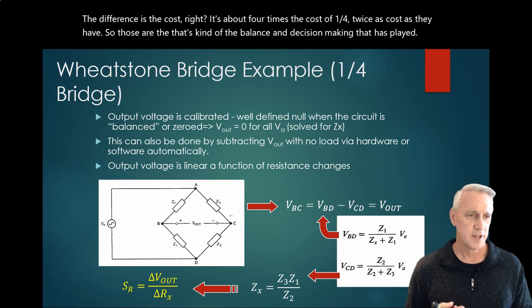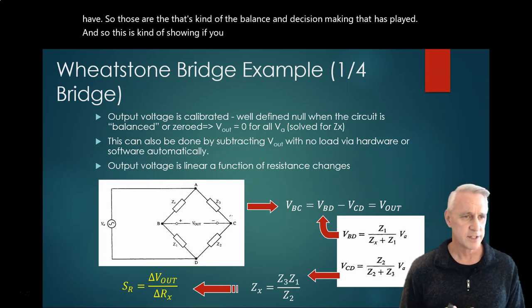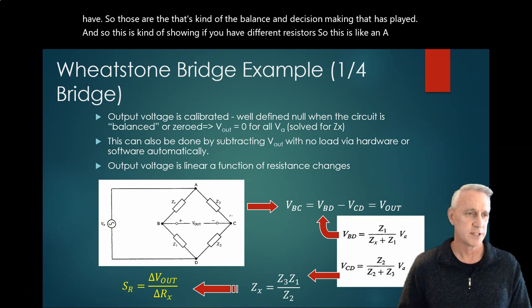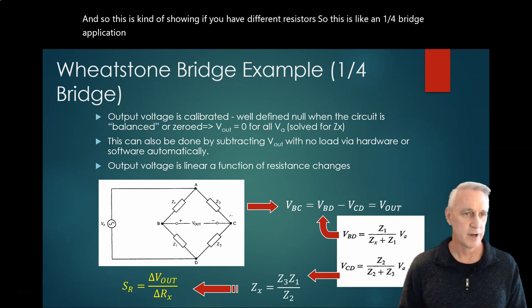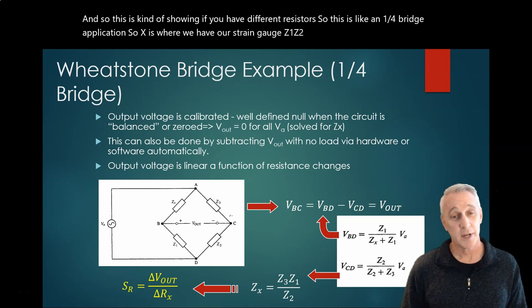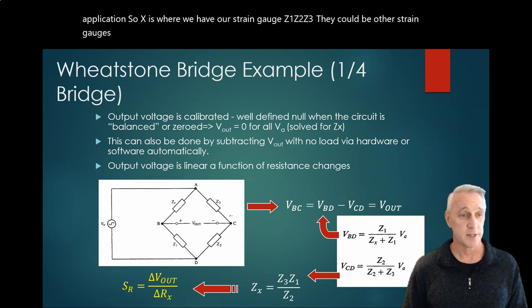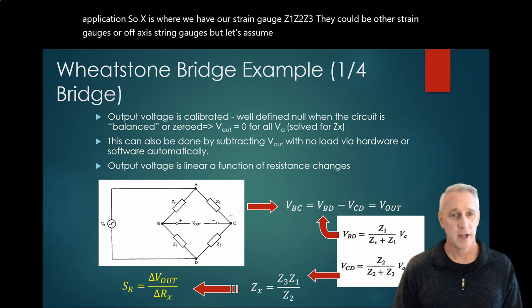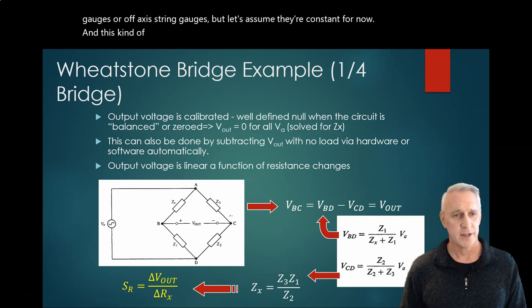And so this is showing if you have different resistors - this is like in a quarter bridge application. So Zx is where we have our strain gauge. Z1, Z2, Z3 - they could be other strain gauges or off-axis strain gauges, but let's assume they're constant for now. And this kind of shows how the equation works out.